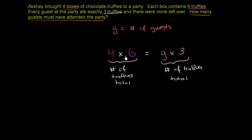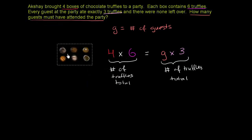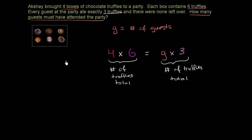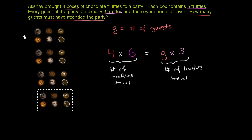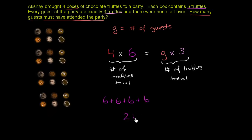So let's figure out what four times six is. Let's visualize four times six: one box gives six truffles, so that's one times six, two times six, three times six, and four times six. Another way of thinking about it: six plus six plus six plus six equals 6, 12, 18, 24. So the left-hand side is 24. We get 24, and this equals the number of guests times three.